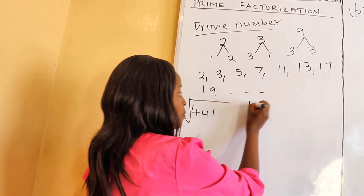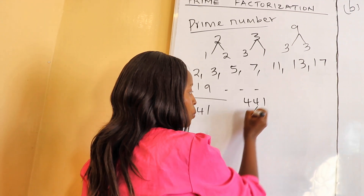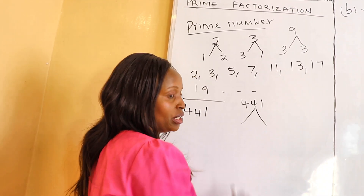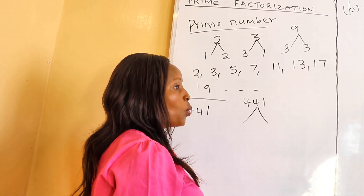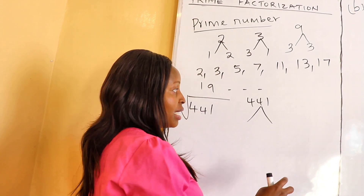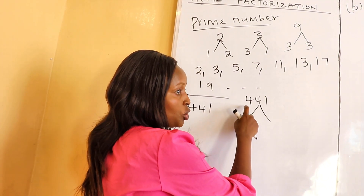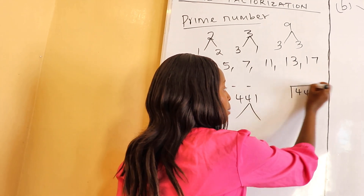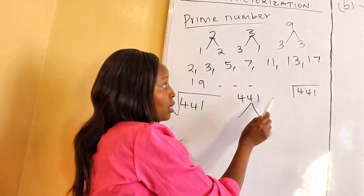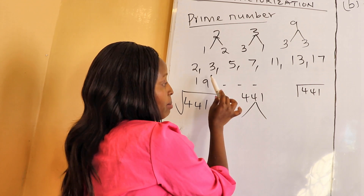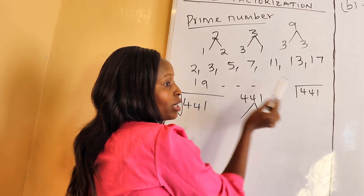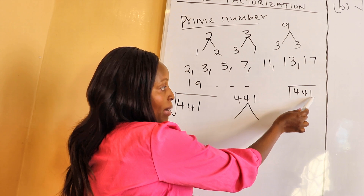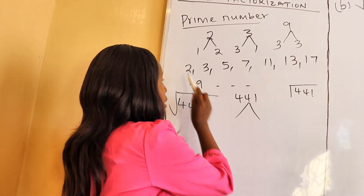For 441, we form a factor tree — it has branches here and here. We look for prime numbers that can divide 441. The number 441 cannot be divisible by two since the last digit is odd, not even. So we don't pick two — we pick three.